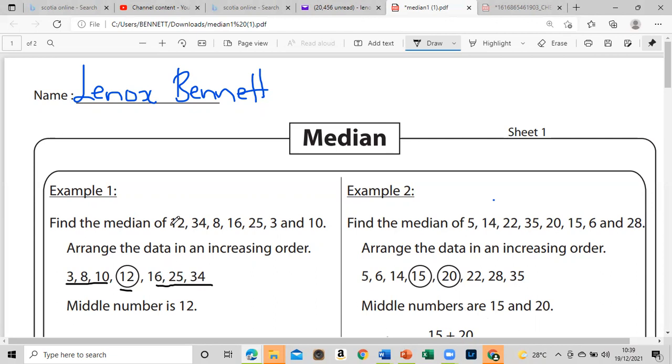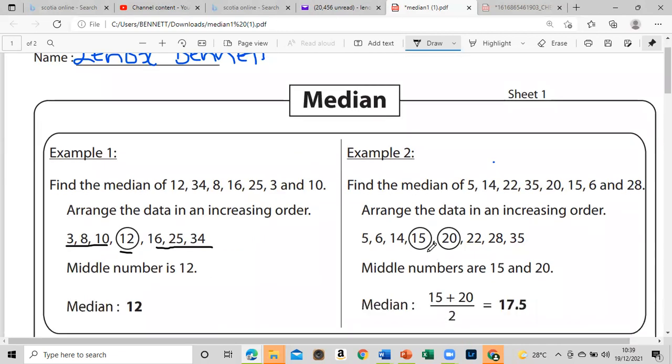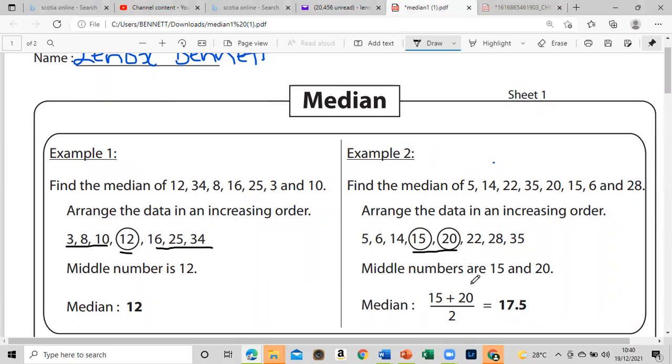But what happens when it is not an odd number but an even number, and there's no one middle number? This is what we do. Still arranging in ascending order. However, we take the two numbers in the middle, we add them first, so this will give us 35. We divide it by 2, so that gives us 17 and a half.